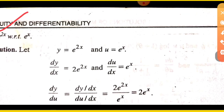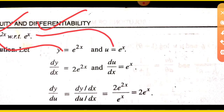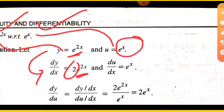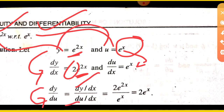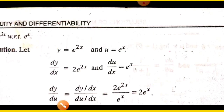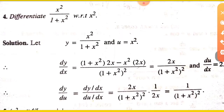Next question: find the derivative of e to the power 2x with respect to e to the power x. So y equals e to the power 2x, and u equals e to the power x. Find dy upon dx first, then du upon dx. Then divide to find dy upon du.